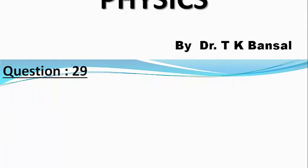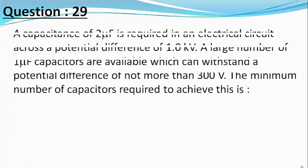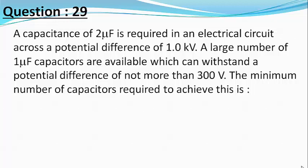The question is: A capacitance of 2 microfarad is required in an electrical circuit across a potential difference of 1 kilovolt. A large number of 1 microfarad capacitors are available which can withstand a potential difference of not more than 300 volts. The minimum number of capacitors required to achieve this is: